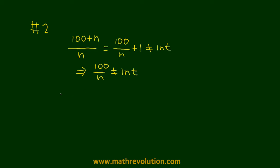So 100 should not be divisible by n, essentially. So let's look at the choices here. Choice A is 1, and 100 is obviously divisible by 1, so this is not the right choice. Choice B, 100 is divisible by 2, so this is not the answer.